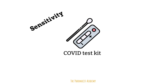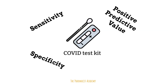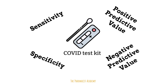Sensitivity, specificity, positive predictive value, and negative predictive value are all important for assessing the accuracy and performance of diagnostic tests. For example, this COVID test kit. In general, the goals of diagnostic tests are simple and straightforward.